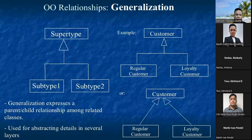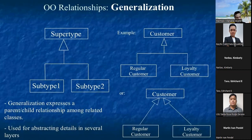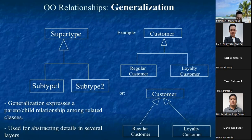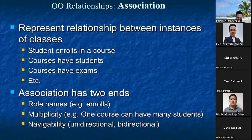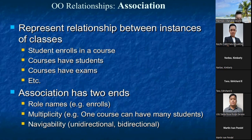Here are the examples. Generalization expresses a parent-child relationship among related classes. As you can see, the supertype and subtype — for example, 'Customer' as the supertype, with 'Regular Customer' and 'Loyalty Customer' as subtypes. All regular customers and loyalty customers are customers. Generalization is used for abstracting data in several layers. Association represents relationships between instances of classes — a student enrolls in a course, a course has students, and a course has an exam.